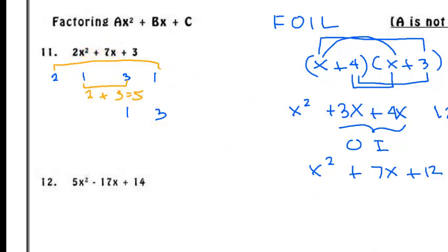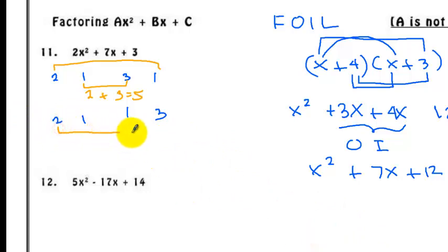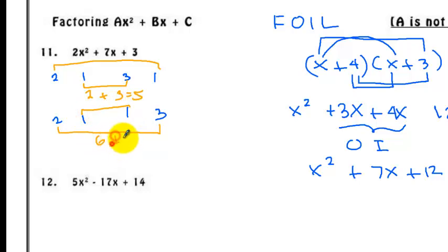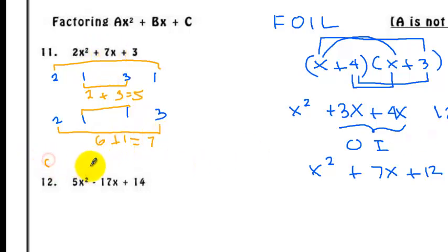What if we pair up (2, 1) and (1, 3)? Multiply the outer: 2 times 3 is 6, and then the inner: 1 times 1 is 1. If you add 6 and 1, we get the middle term. So this is the correct combination.